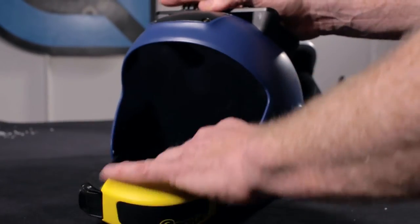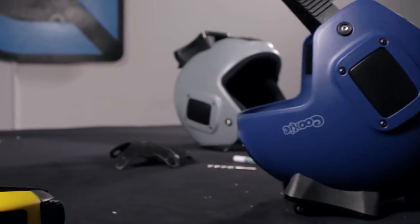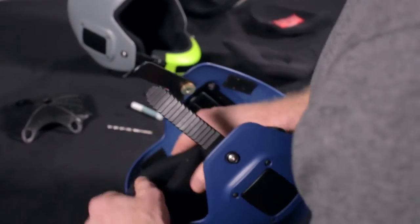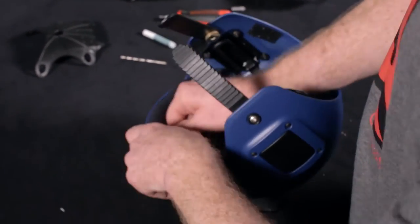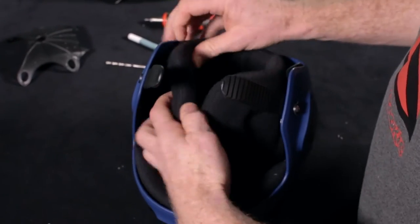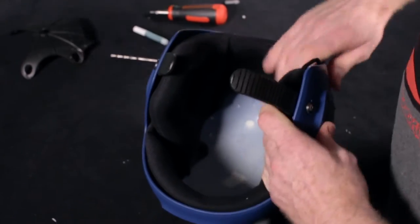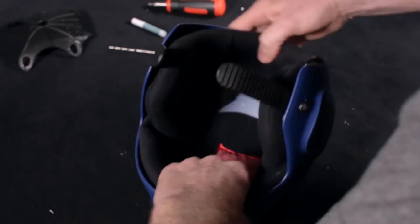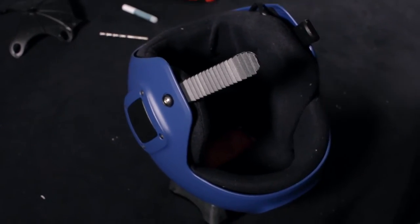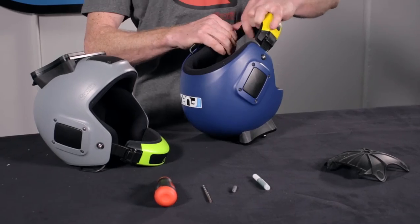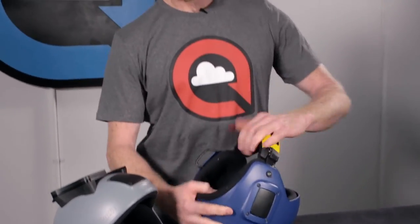And lastly, we'll reinsert the liner. Firstly, the brow. Then the ears. Next, the top. Last bit, the Half Moon. Alright, once you've got the liner in, chin cut back on, you're ready to go.